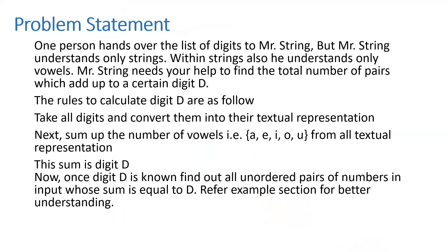So one person handed over a list of digits to Mr. String. But Mr. String understands only strings. Within strings, he understands only vowels. Mr. String needs your help to count the number of paths which add up to a certain digit D. The rule to calculate D is as follows: take all the digits and convert to a textual representation. Next, sum up the number of vowels from all the textual representations. This sum is digit D.